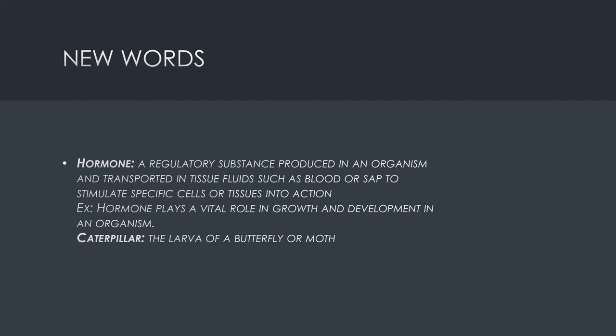Hormone: a regulatory substance produced in an organism and transported in tissue fluids such as blood or sap to stimulate specific cells or tissues into action. Example: hormones play a vital role in growth and development in an organism.